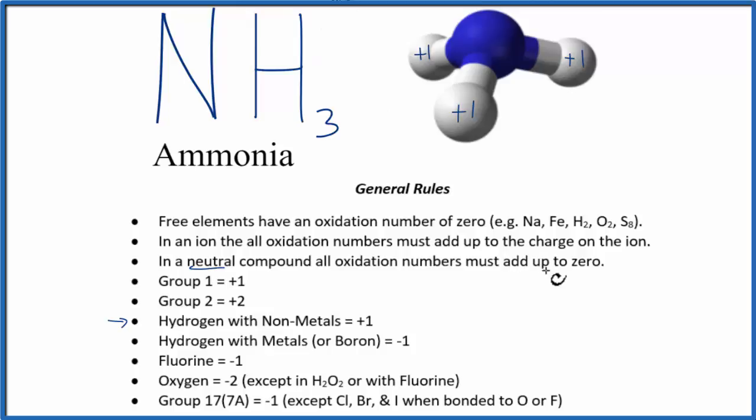And we know that in a neutral compound - this is neutral because there's no plus or minus - all the oxidation numbers have to add up to zero. So think of it this way: we have plus one plus two, so that's plus three, plus some number is going to equal zero. Well it's going to have to be a minus three, and that makes the oxidation number here for the nitrogen minus three.